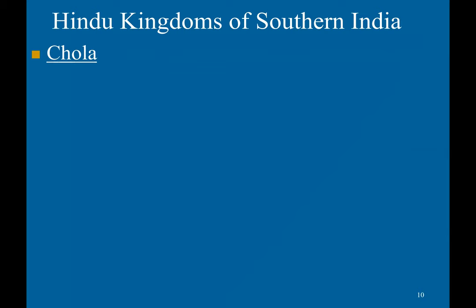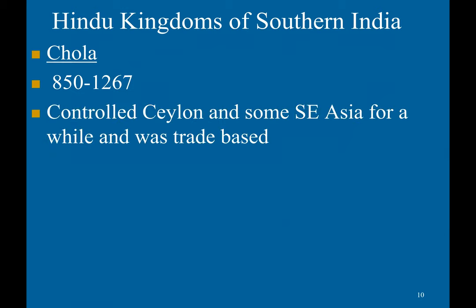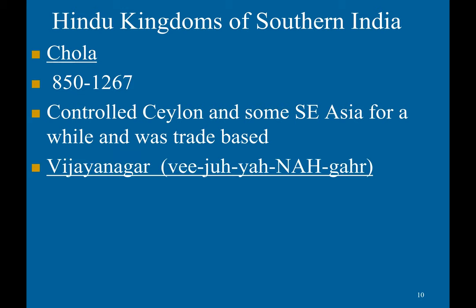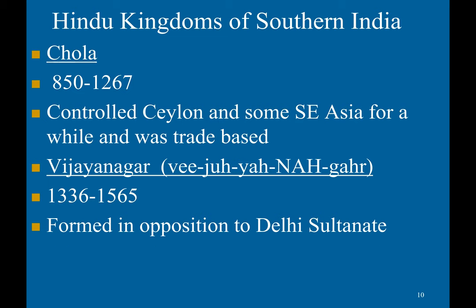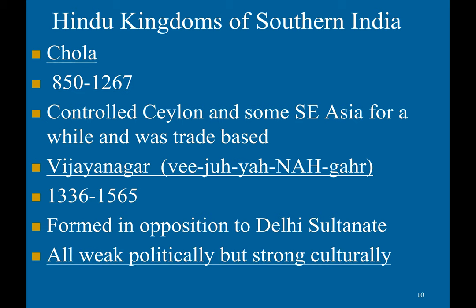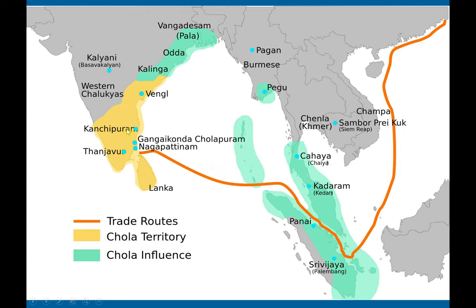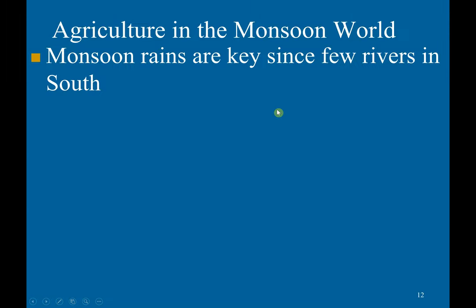Hindu kingdoms also developed in southern India. For example, the Chola kingdom, reigning from 850 to 1267, controlled Ceylon (a.k.a. Sri Lanka) and some parts of Southeast Asia, and was trade-based. You also get the Vijayanagara kingdom, reigning from 1336 to 1565, formed in opposition to the Delhi Sultanate. All of these kingdoms were weak politically but strong culturally. This map depicts the Chola territory; the green areas show regions influenced by the Chola kingdom, and a major trade route is also visible.